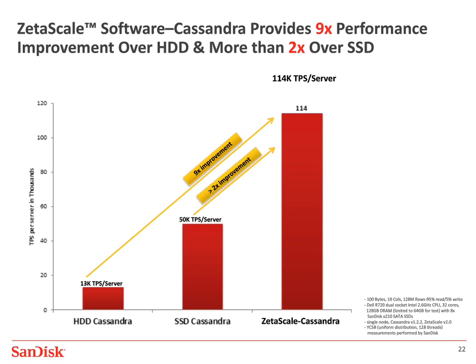A lot of companies with a NoSQL Cassandra environment just go straight to SSDs — the performance benefit is significant. However, the data is growing so fast. We've talked to customers whose NoSQL implementations are growing 700% or 1,000% a year. How do you keep up with that when you didn't budget for it? You need more performance out of a given server. With ZetaScale integrated into Cassandra, you can get an additional 2x improvement on the exact same hardware and SSD array.